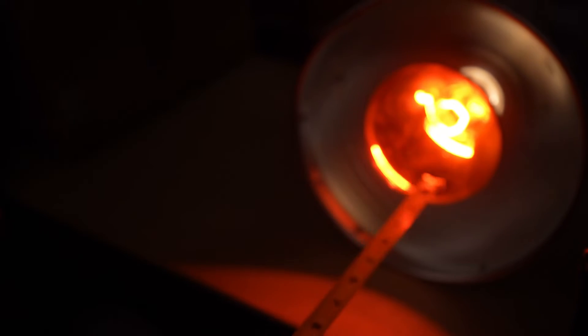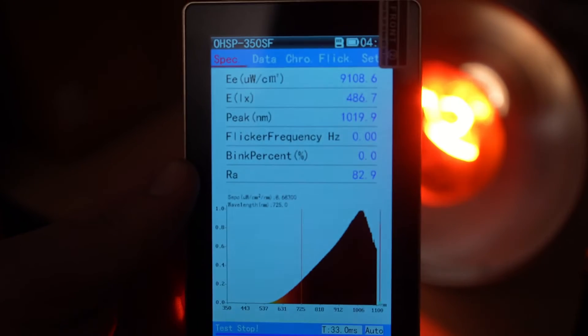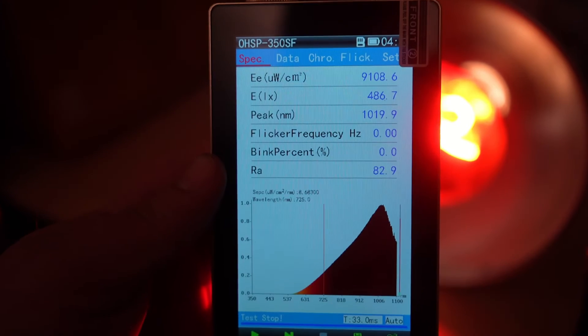So we're going to check the spectrum and intensity at 20 inches away. Even at 20 inches away, it's usually recommended to be at least 18 inches away from these heat lamps because of the longer wavelengths that cause a lot of heat.